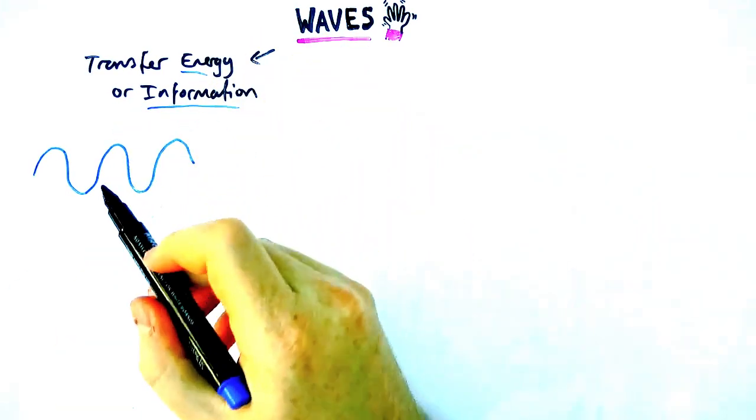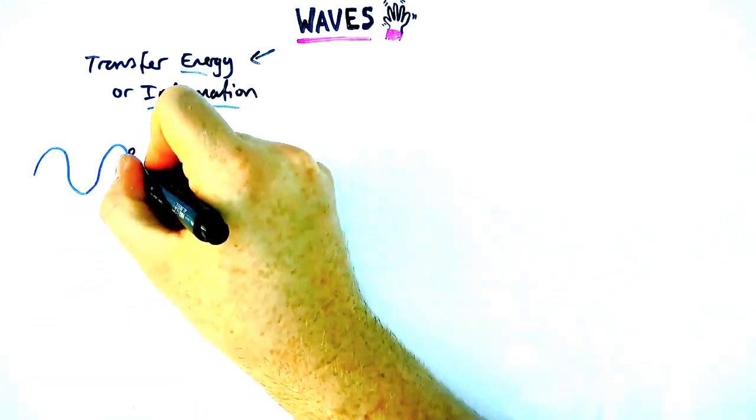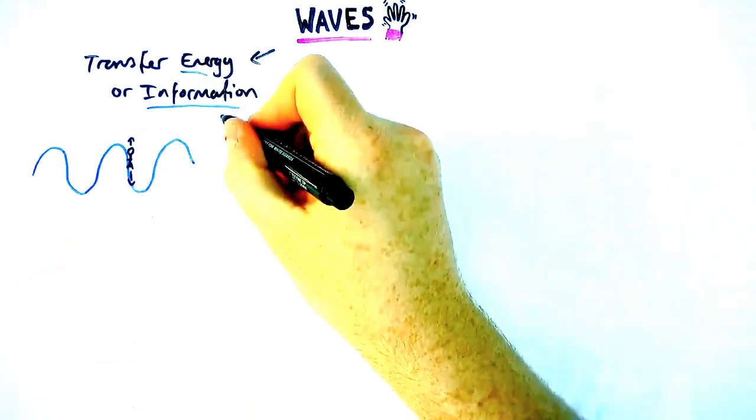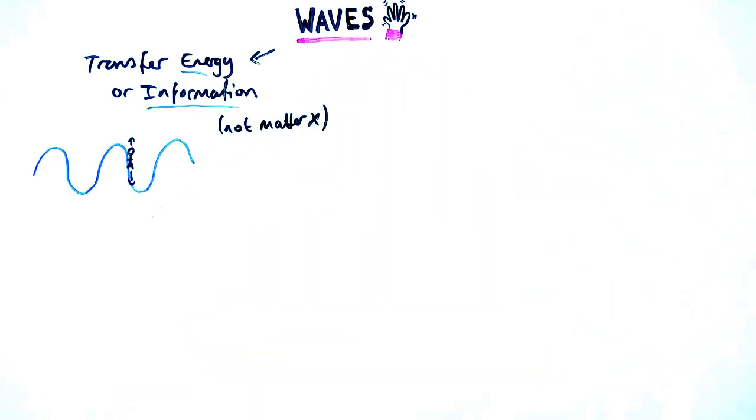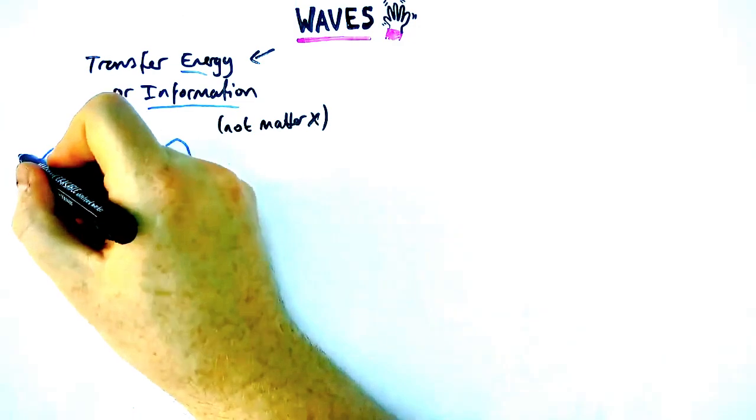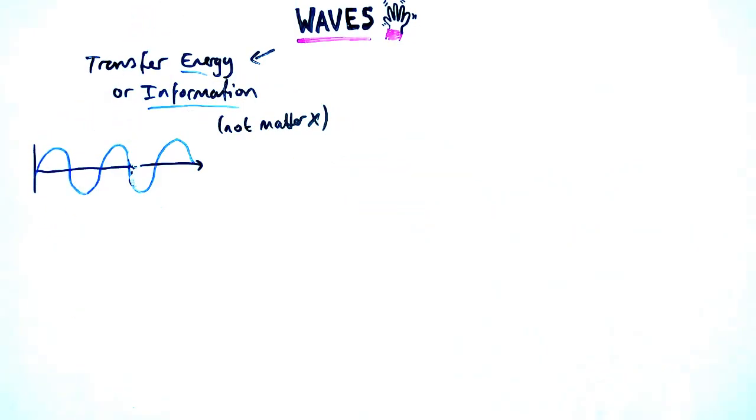First thing to note about all waves is that they transfer energy or information from one place to another. They do not transfer things. For example, if you're swimming in the deep ocean and a wave goes past you, you do not get transferred all the way to the shore. The wave just goes past you. You go up, you go down. So matter is not transferred in a wave.